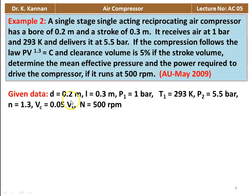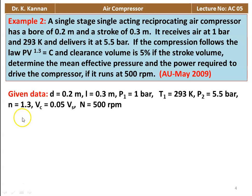Given data: diameter = 0.2 m, stroke length = 0.3 m, inlet pressure P1 = 1 bar, inlet temperature T1 = 293 K, delivery pressure P2 = 5.5 bar, index of compression n = 1.3, clearance volume Vc = 0.05 × Vs (5% of stroke volume), and speed = 500 RPM.